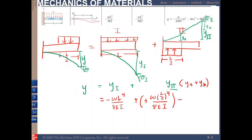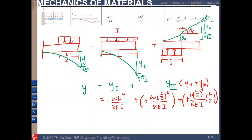For yb, since theta is expressed in radians, we can multiply the slope theta2 by the remaining length. Theta2 is the slope at the end of the half-length beam — taken from the table with L replaced by L/2 — giving theta2 = w(L/2)³ / 6EI (positive, since it is upward). Then yb = theta2 × (L/2), the length of the straight-line segment from C to B.